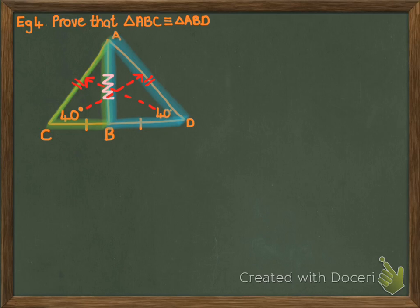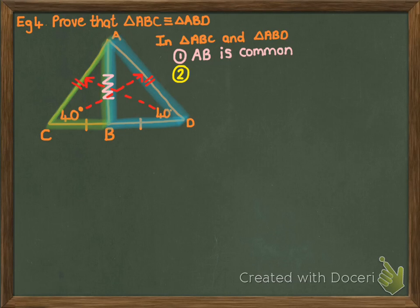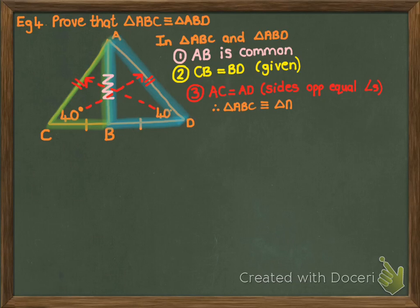This is a slightly sneaky example because the big triangle is isosceles — it has two equal angles, so the sides opposite those equal angles are also equal. That gives us two different ways to prove congruency: SSS, since all three sides are now equal, or SAS using the red sides equal, the 40-degree angle, and the orange side equal. I'll go with side, side, side. In triangle ABC and triangle ABD: AB is common; CB equals BD, given; and the red sides are equal because they are sides opposite equal angles. Therefore the triangles are congruent by side, side, side.